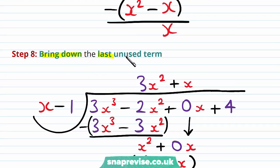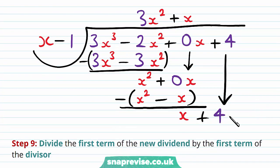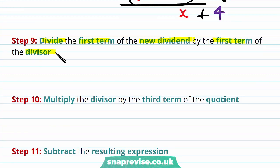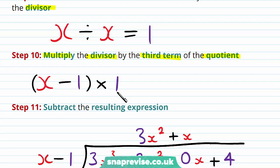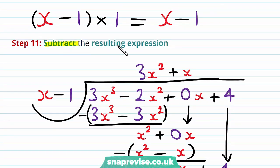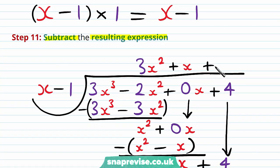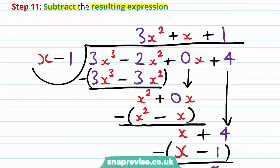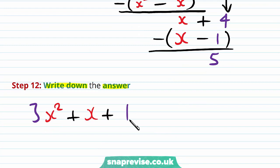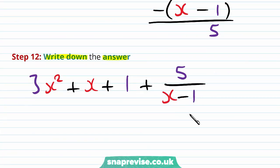Our eighth step is to bring down the last unused term, +4. Our ninth step is to divide x by x, giving us 1. Our tenth step is to multiply the divisor x − 1 by 1, giving us x − 1. Subtracting gives us a remainder of 5. So our final answer is the quotient 3x² + x + 1, plus the remainder 5 over the divisor (x − 1).